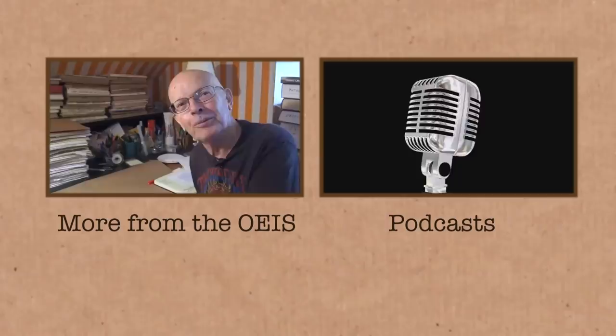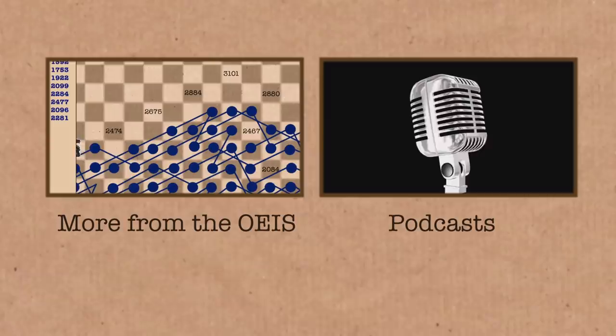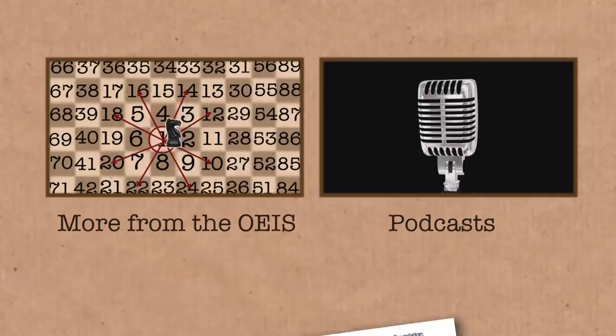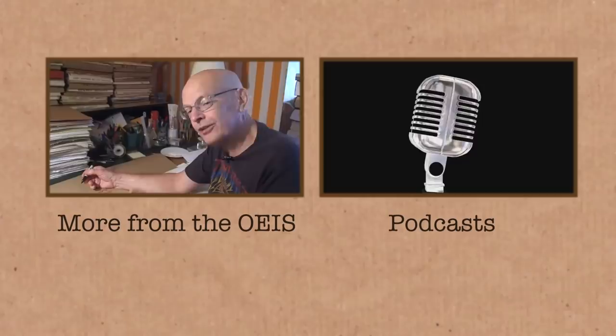You can find out more about this sequence and many other sequences on the online encyclopedia of integer sequences. And this is entry number A011784. And we've got plenty more videos with Neil Sloan, who's the founder and keeper of the OEIS. There are links on the screen and in the video description.